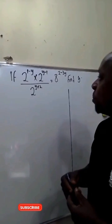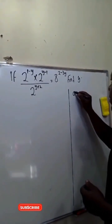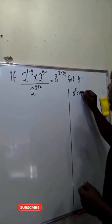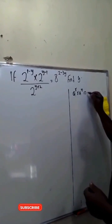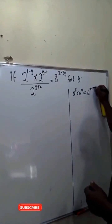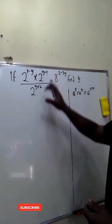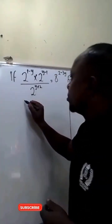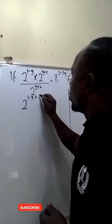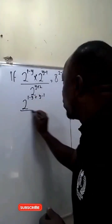To simplify this, we're going to apply the product law of indices, which states that a raised to power x times a raised to power y is the same as a raised to power x plus y. Applying the same to this, the numerator will become 2 raised to power 1 minus y plus y minus 1.